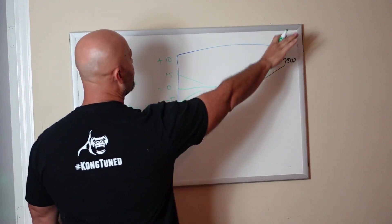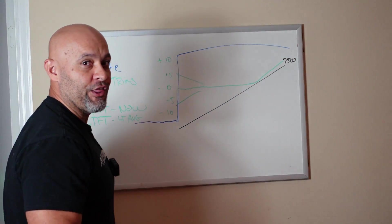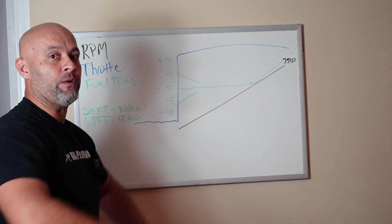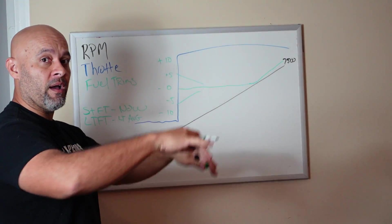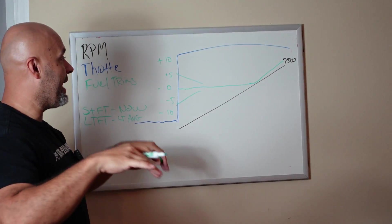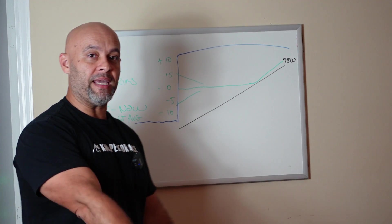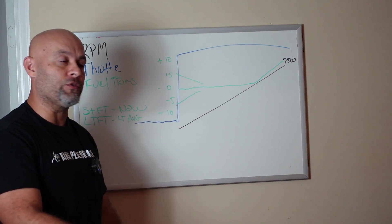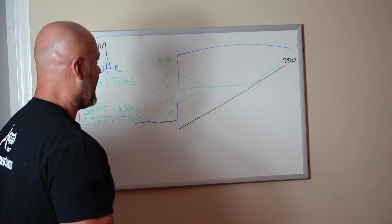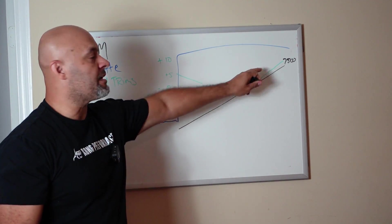They're starting to trend lean. The car is trying to put fuel in with RPM. Uh-oh, something's going on. There's a fueling variable. Now your fuel trims are spiking. I go, these are spiking fuel trims.